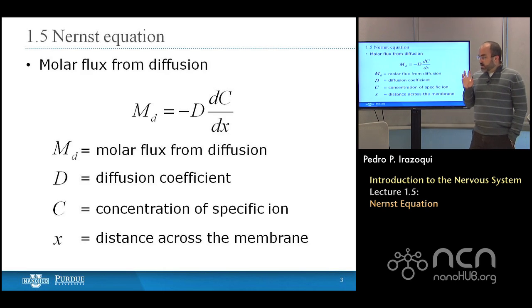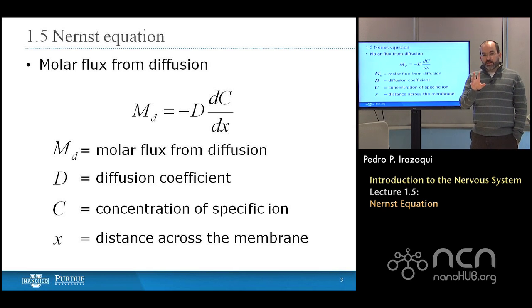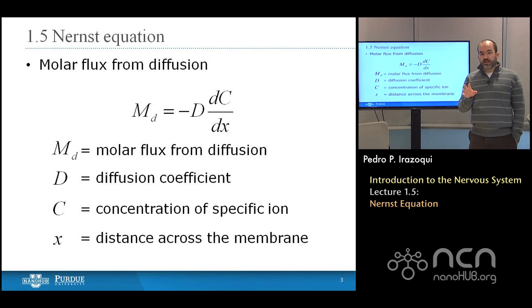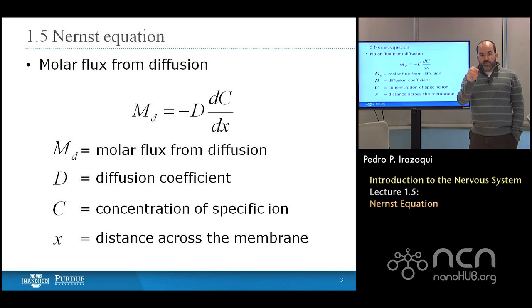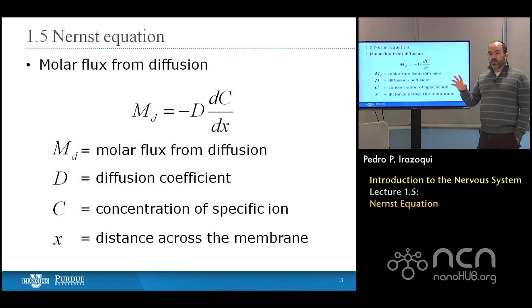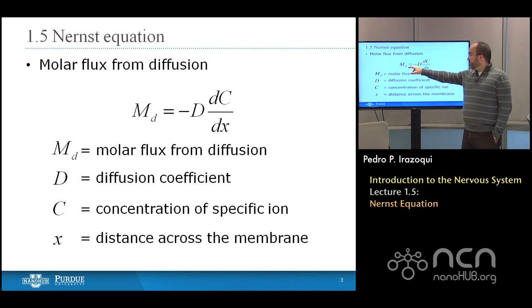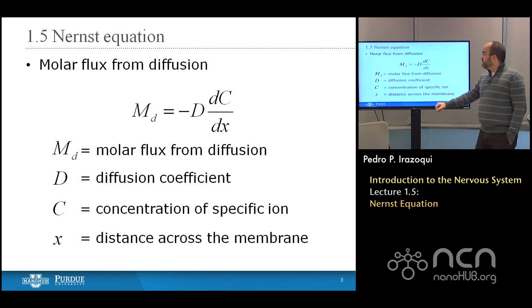So when we spoke about those two conditions — the membrane permeability and the concentration gradient — we talked about how there are two forces that come about. One is a diffusion force or a molar flux of diffusion that you would expect to see from an area of higher concentration to an area of lower concentration if the membrane permits the flow of those ions. And so the molar flux from diffusion is a known equation. You can equate the flux from diffusion, M sub D for diffusion — the molar flux is M, D is for diffusion — multiplied times the derivative of the concentration with respect to X.